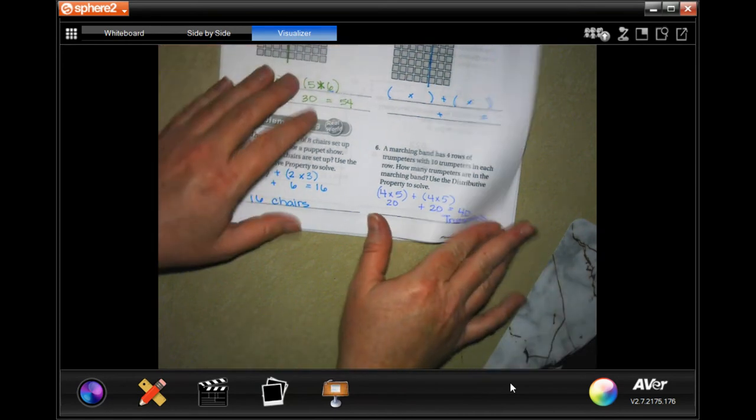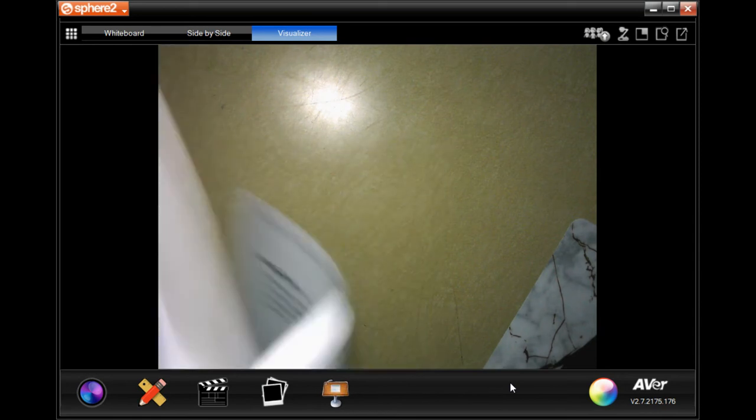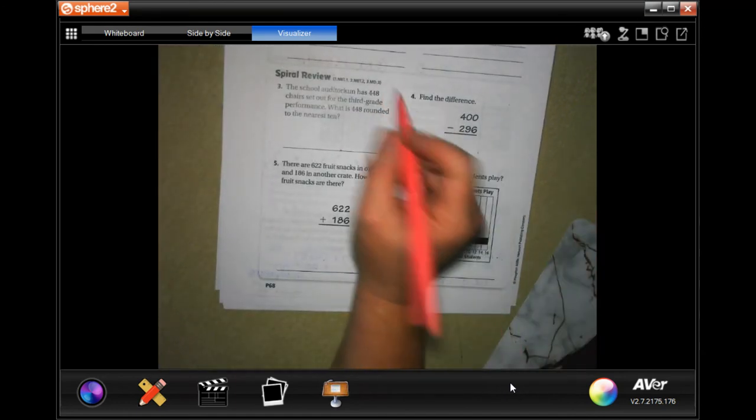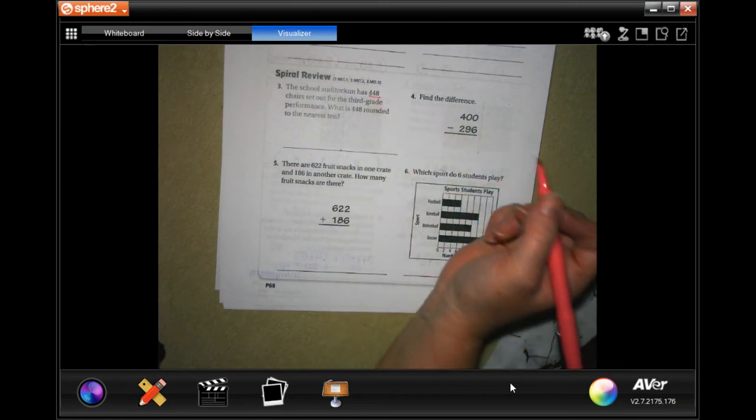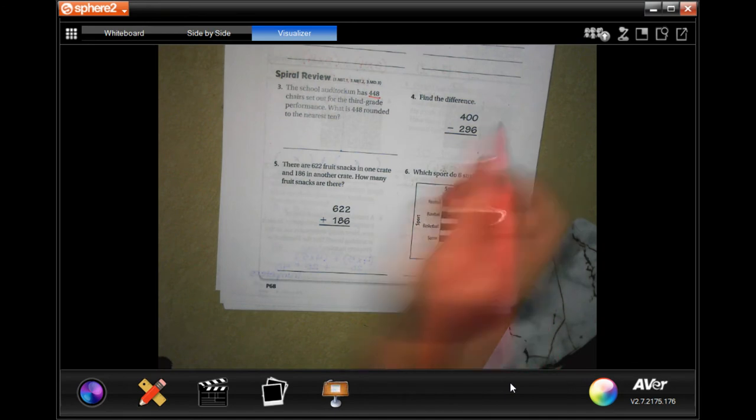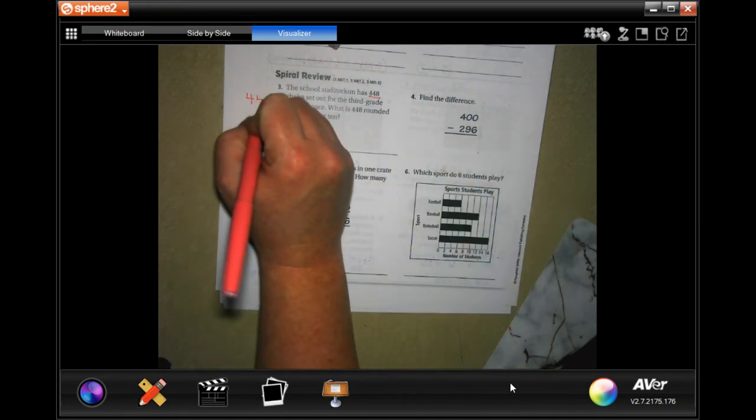We're going to go on to the back. You guys are going to do the lesson check just like always, and we're going to go down to the spiral review. The school auditorium has 448 chairs set out for the third grade performance. What is 448 rounded to the nearest 10? So over here I'm going to put 448.